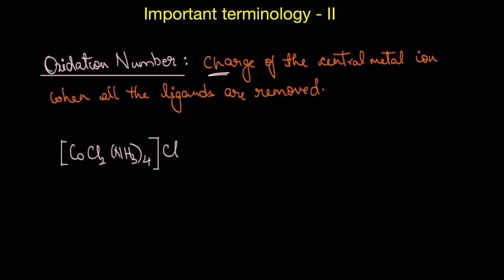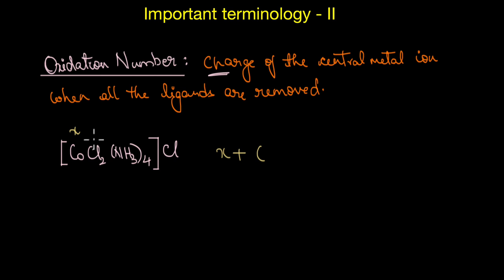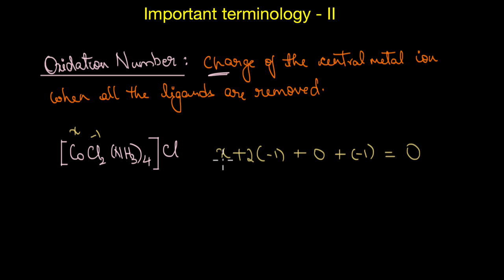Now, can you find the oxidation state of cobalt in this particular complex? Let x be the oxidation state of cobalt. This is a neutral coordination compound, so the overall charge is zero. Chlorine has a −1 charge, and NH₃ is neutral, giving x + 2(−1) + (−1) = 0. Solving this: x − 3 = 0, so x = +3. The oxidation state of cobalt is written as Co(III).